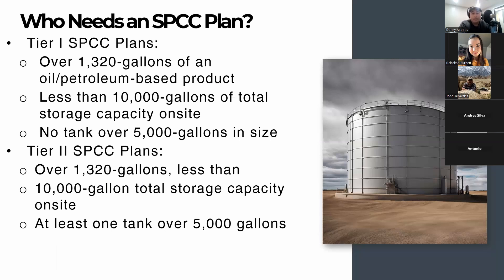We have three different tiers. In the regulations, it only mentions two, but Tier 1 is for people who have over 1,320 gallons of an oil or petroleum-based product on site, less than a total storage capacity of 10,000 gallons, and no single tank over 5,000 gallons. This is your Tier 1 — simple, self-certified plan. There is an EPA template you can use. Generally when I have clients that apply for a Tier 1 plan, I always recommend they can do this on their own. The templates provided by the EPA are simple enough for people to walk through.